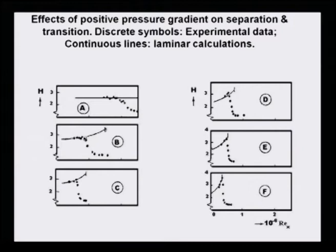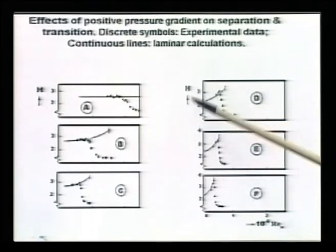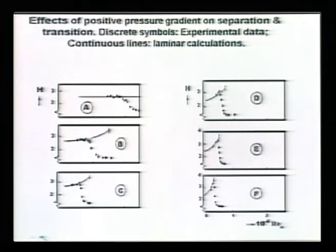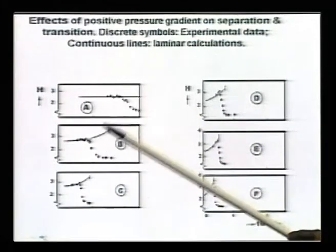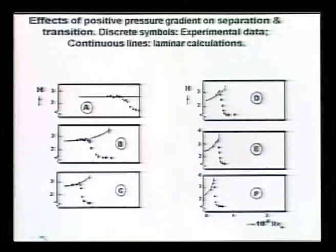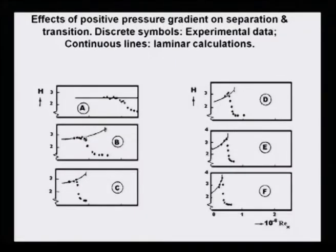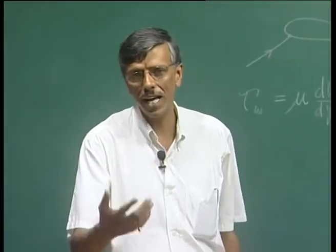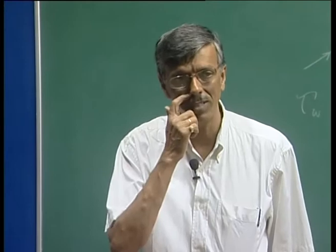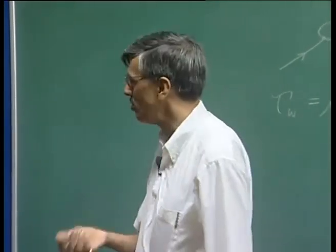We are essentially studying the effect of pressure gradient on flow instability. What we are seeing here is H versus Re. On the y axis we plot H, the shape factor. On the x axis we plot Re, scaled down by a factor of a million. The discrete data points are the corresponding experimental observations, and the solid line indicates some effort for calculating the boundary layer - we can solve the boundary layer equation, calculate H, and see what happens.